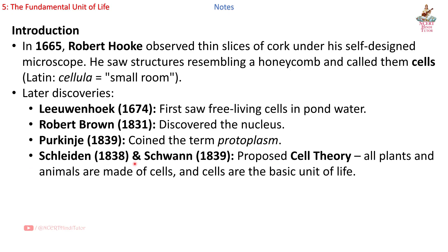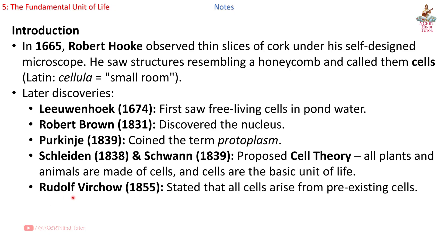Schleiden (1838) and Schwann (1839) proposed cell theory: all plants and animals are made of cells, and cells are the basic unit of life. Rudolf Virchow (1855) stated that all cells arise from pre-existing cells.